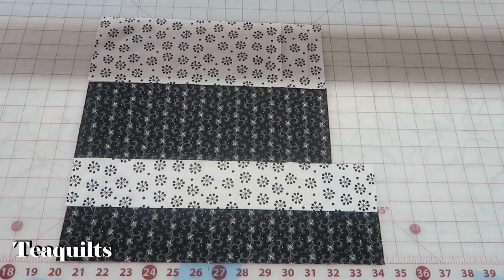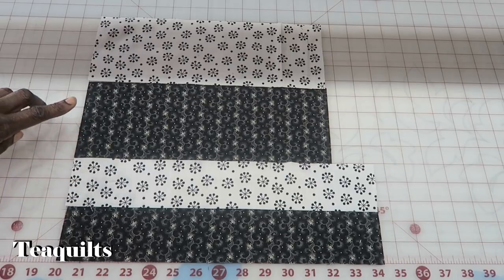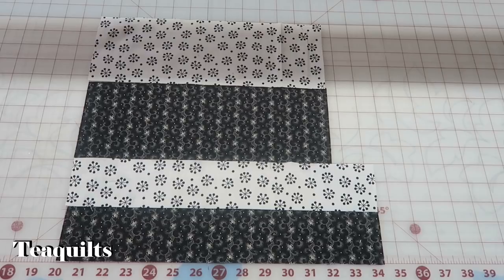So this time we're working with black and white prints. They ask that we use a white print with black and then a black print with white, and from both of those prints we are going to be cutting the exact same fabric pieces.